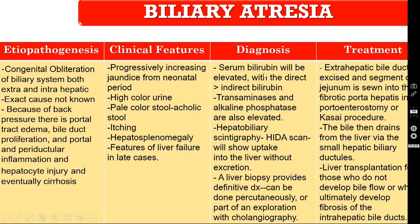For diagnosis, serum bilirubin will be elevated with direct bilirubin exceeding indirect. Both alkaline phosphatase and transaminases will also be elevated. GGT should be done along with alkaline phosphatase to confirm hepatobiliary pathology. Hepatobiliary scintigraphy — the HIDA scan — will show uptake of isotope by the liver without excretion into the extrahepatic biliary radicals or small bowel. Liver biopsy should also be done to exclude neonatal hepatitis, either percutaneously or during intraoperative cholangiography.